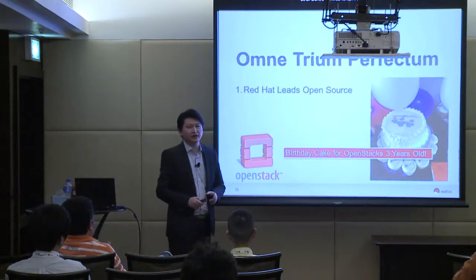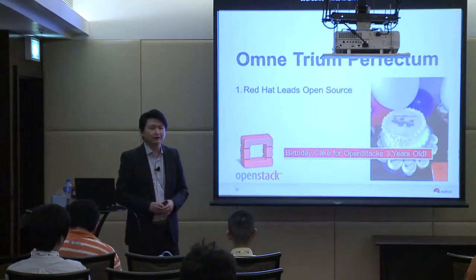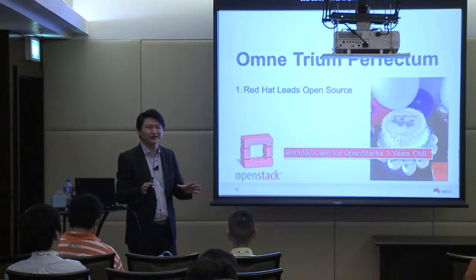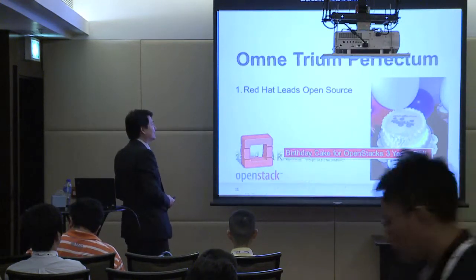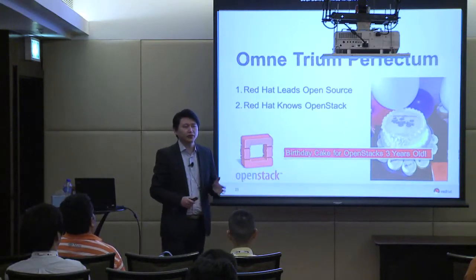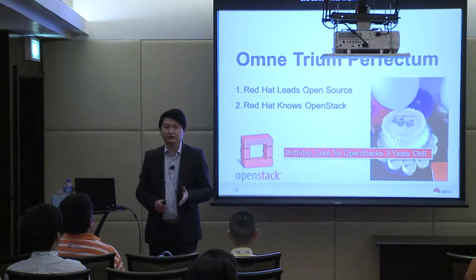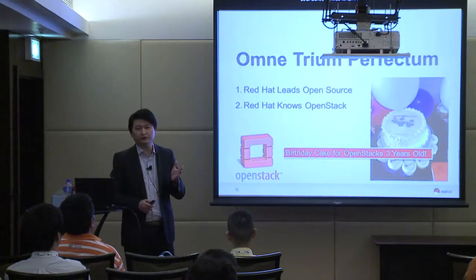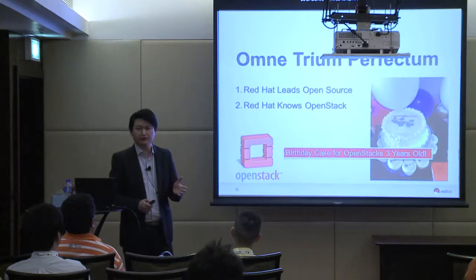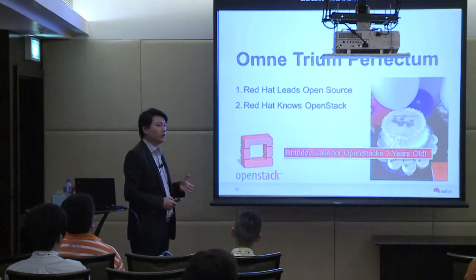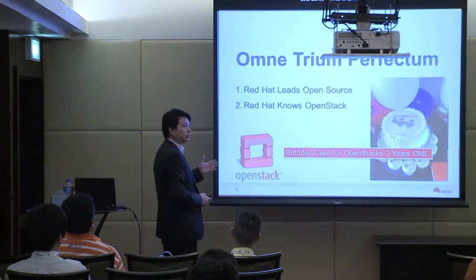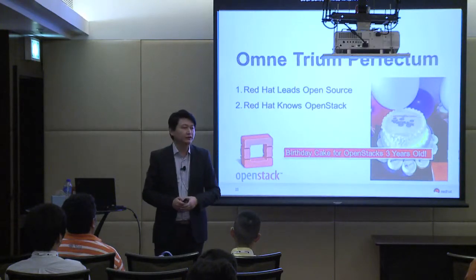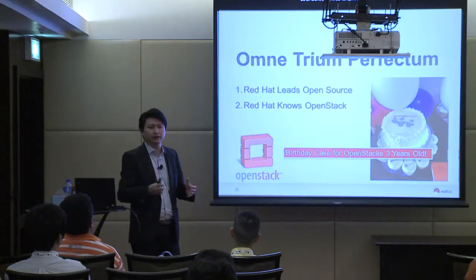The first thing is that Red Hat leads open source — I don't think too many would argue with that. The second is that Red Hat knows OpenStack. We are the number one contributor for Grizzly and Havana. We have the top six out of ten contributors being Red Hat employees for OpenStack. We open a lot of new projects like TripleO, and we are enrolled in every core project in OpenStack — both deep and broad.